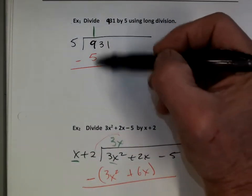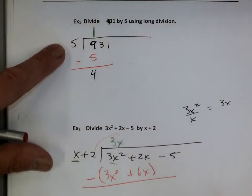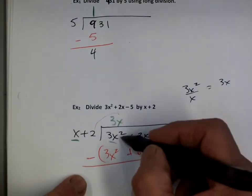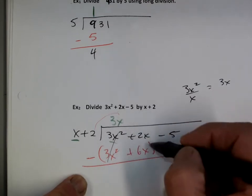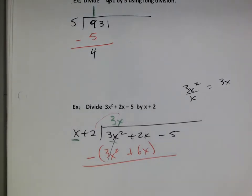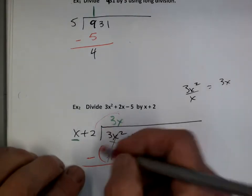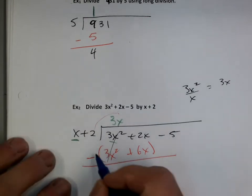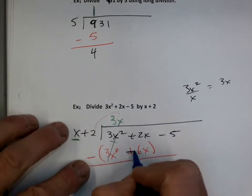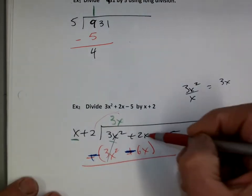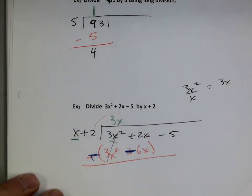So up here, just 9 minus 5 — that's easy, that's 4. And we do the same thing with the polynomial. So 3x squared minus 3x squared — that's just gone. And now we've got to be careful, this is subtract. We've got 2x minus 6x. So I try and bring the negative through so I don't make a dumb mistake. So 2x minus 6x makes a negative 4x.